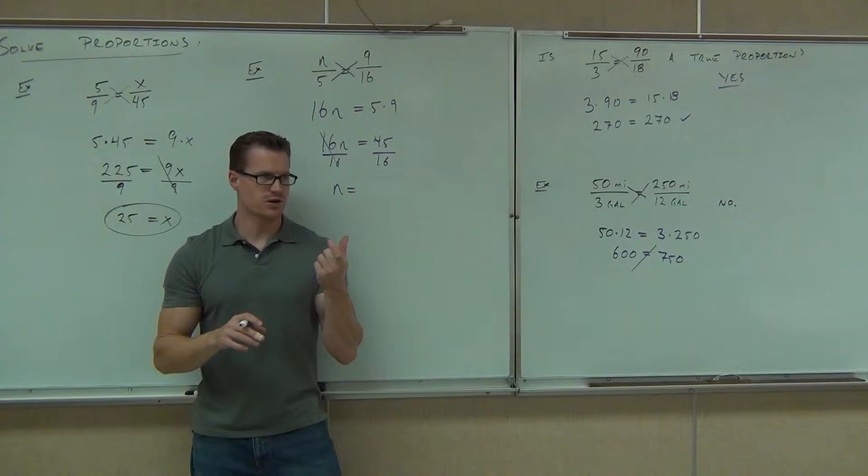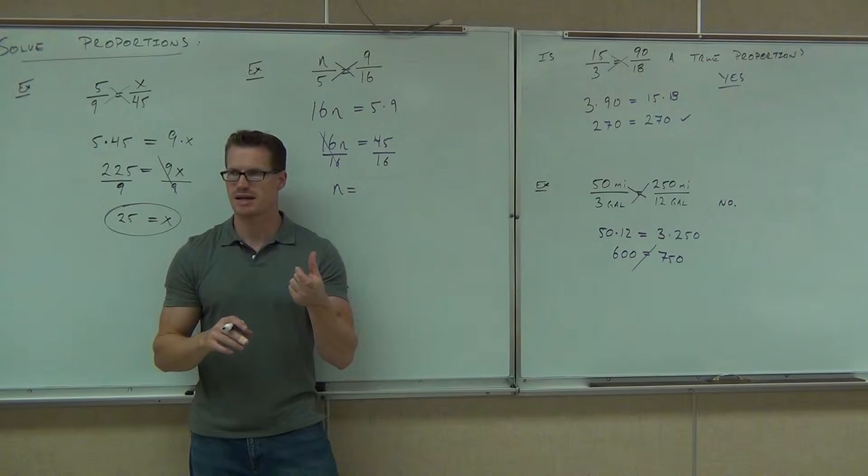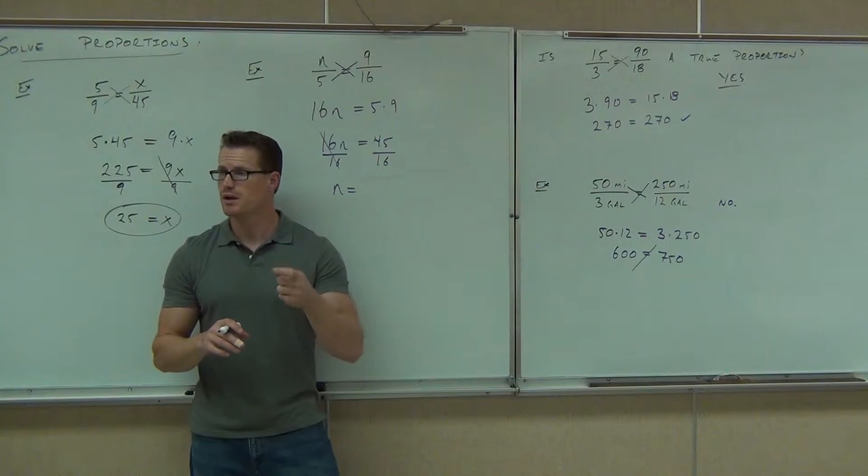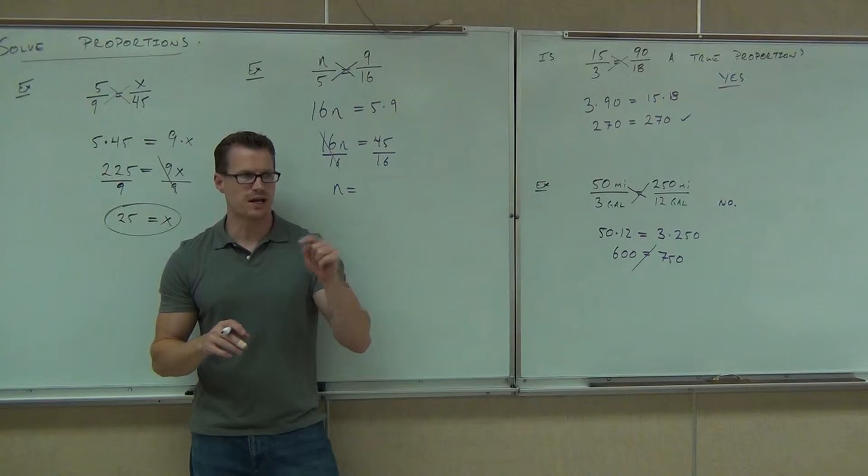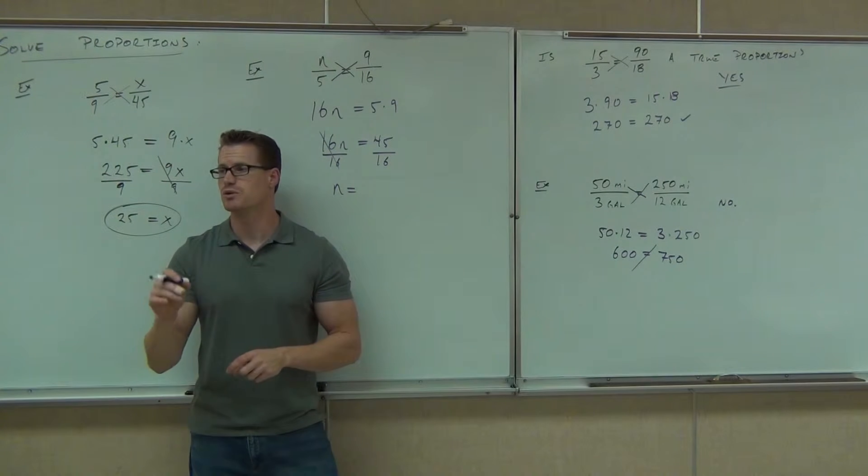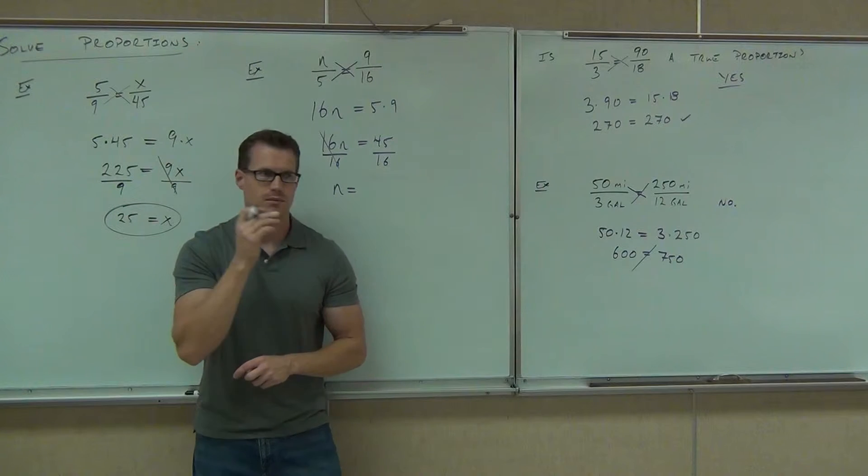So, you could either leave it at 45 over 16, but maybe in the back of the book it doesn't have that. It could have a decimal. So, punch in 45 divided by... Not a fraction, but divided by 16. It'll give you the decimal equivalent. How much is it? 2.8125.